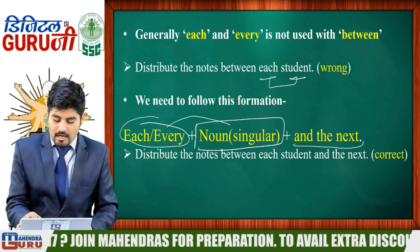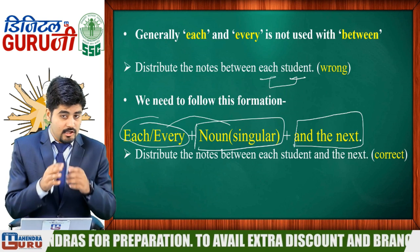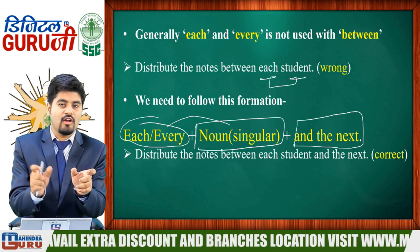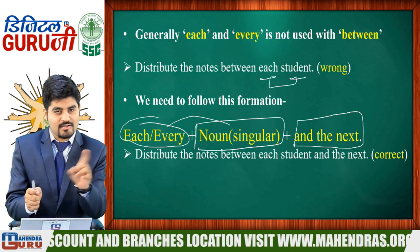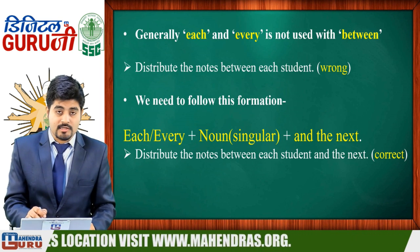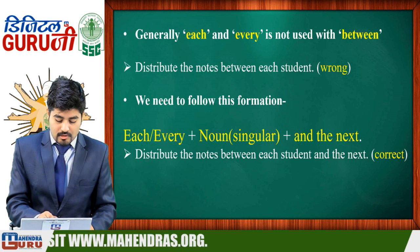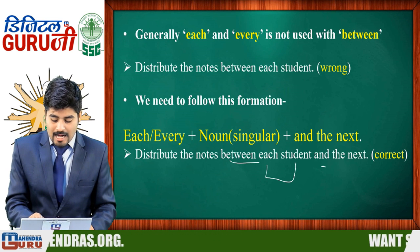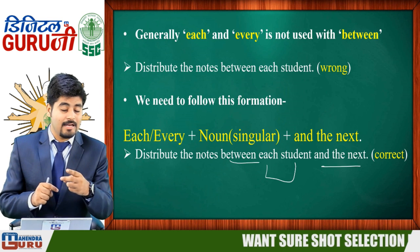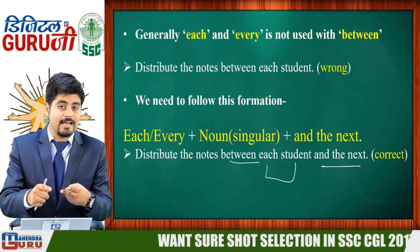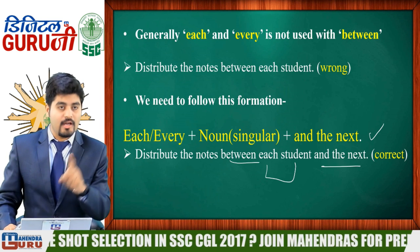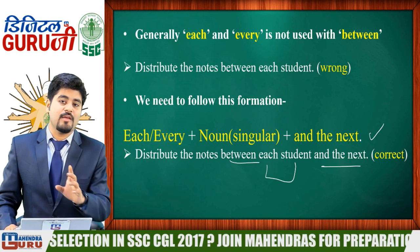The correct form requires 'and the next' after the noun. So the correct sentence is: 'Distribute the notes between each student and the next,' or 'between each boy and the next,' or 'between each teacher and the next.' The phrase 'and the next' must be written. This is the rule for using 'between' with 'each' and 'every.'